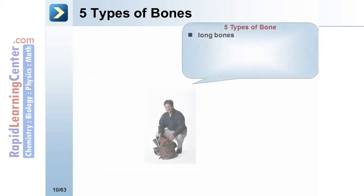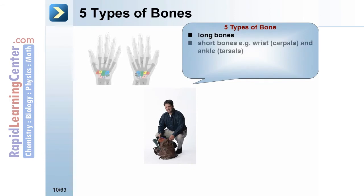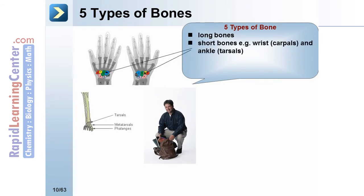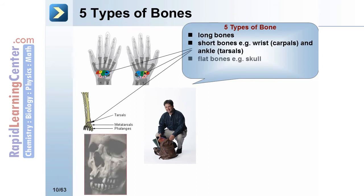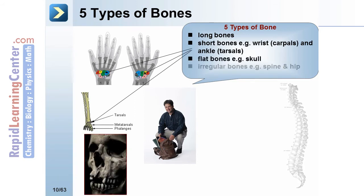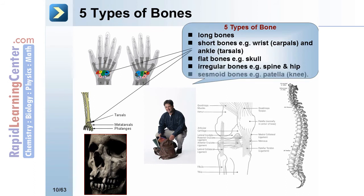There are five types of bone: long bones; short bones, for instance wrist carpals and ankle tarsals; flat bones such as the skull; irregular bones like the spine and hip; and sesamoid bones, for instance the patella of the knee.